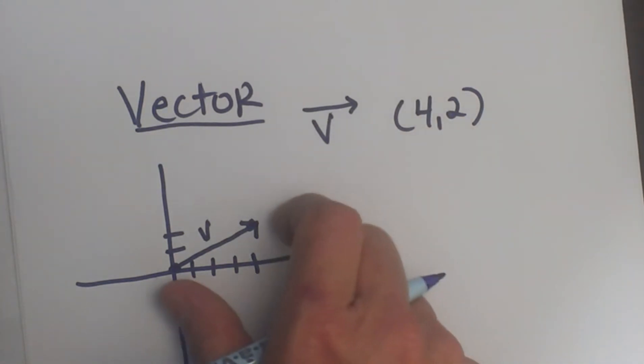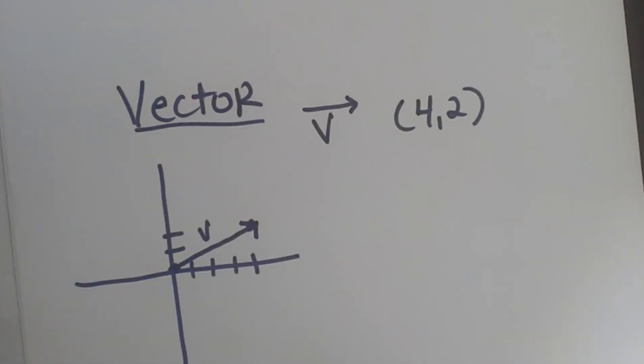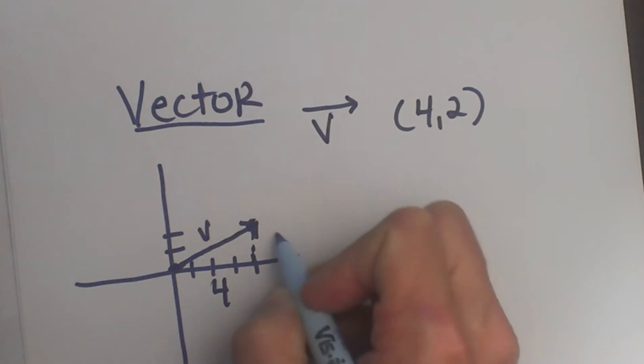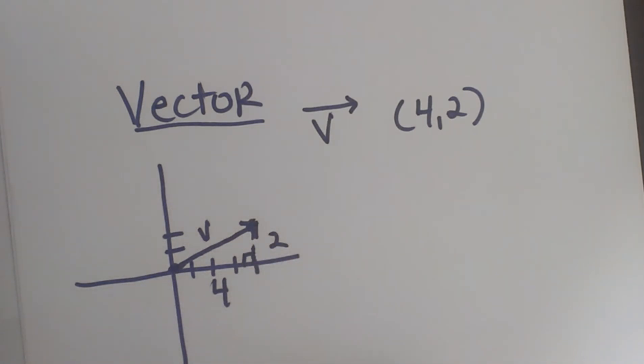If I actually have to come up with a value for the vector, all you're going to do is basically use the Pythagorean theorem and find the length of that segment. So let's crank that out.